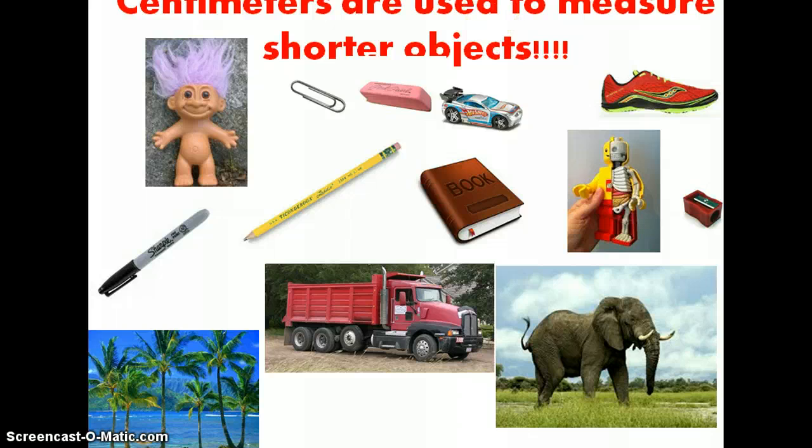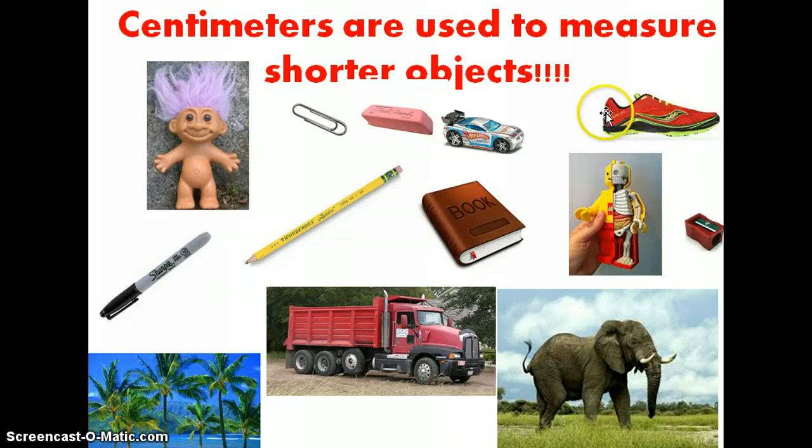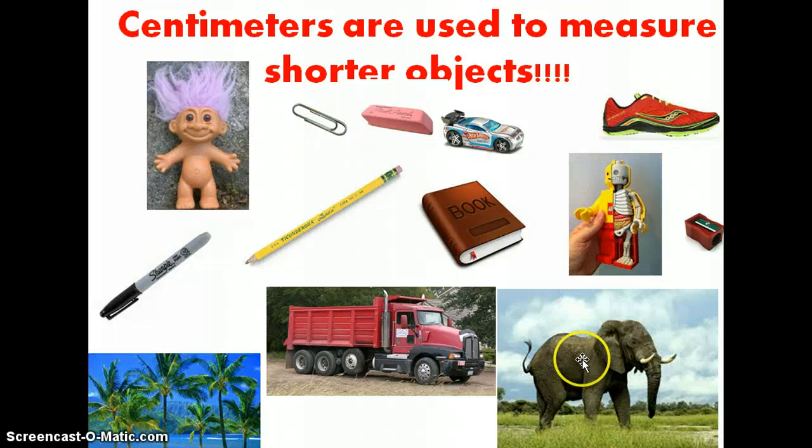The next page says centimeters are used to measure shorter objects. In this page we have a number of various objects. Here we have a troll, a marker, a pencil, a book, a Lego, a shoe. We even have an elephant, a truck, and even some palm trees.